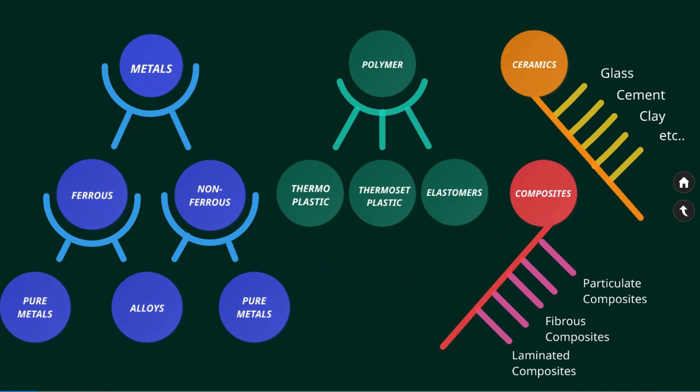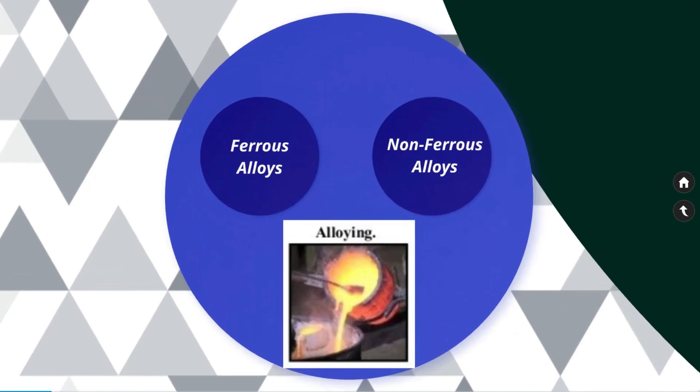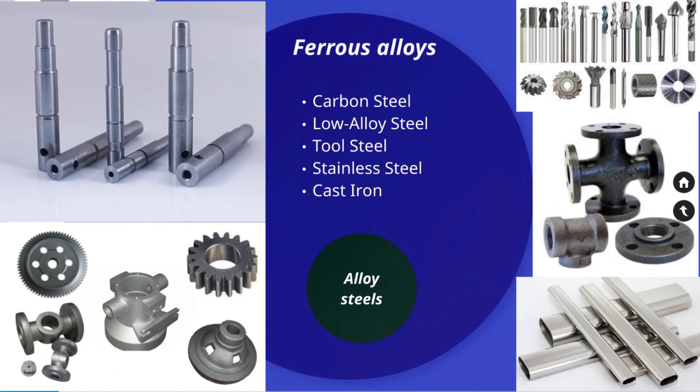Alloys can be divided into two different categories: ferrous alloys and non-ferrous alloys. Ferrous alloys have iron as the base element and are the most common metal alloys in use, due to the abundance of iron, ease of production, and high versatility of the material. The biggest disadvantage of many ferrous alloys is low corrosion resistance.